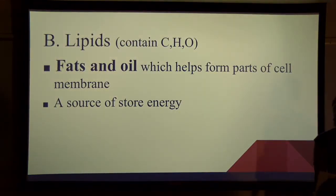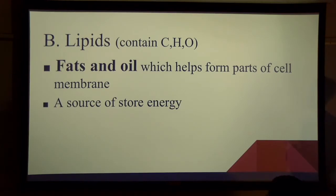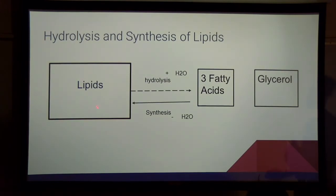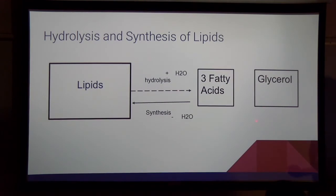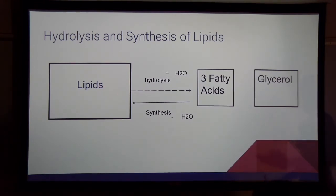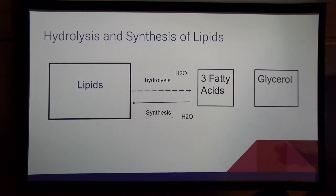The next macromolecule is lipid — an organic compound comprising fats and oils. Lipids as macromolecules can be broken down into three fatty acids and glycerol. Conversely, three fatty acids and glycerol can be used to create a lipid. These are the building blocks for lipid.